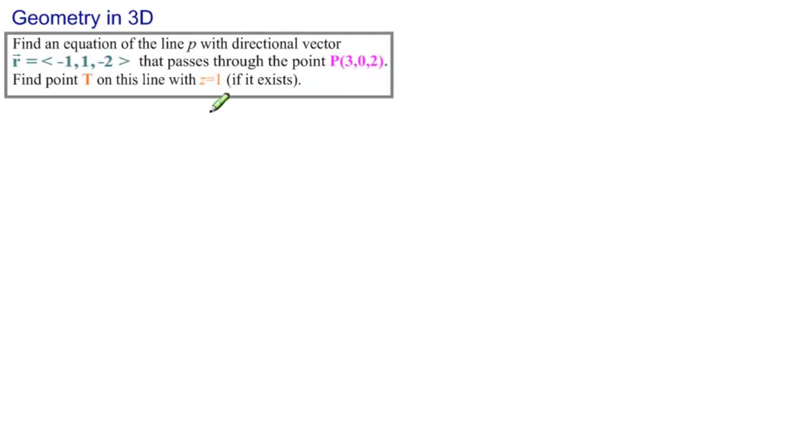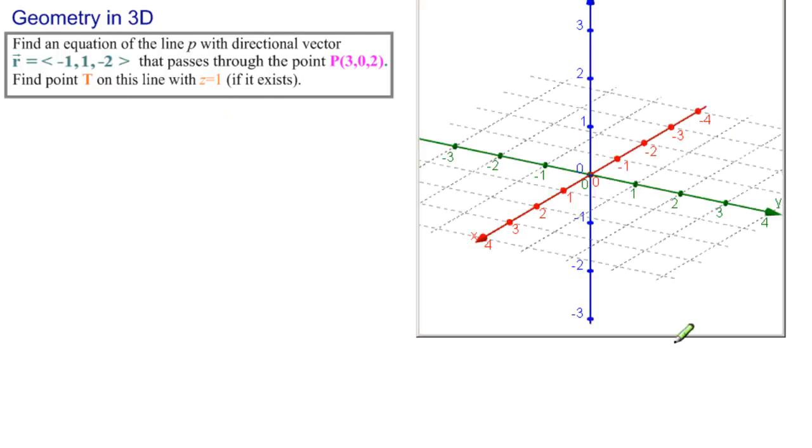Let's first see that this is enough information. So bring up our three-dimensional graph, and here's the point P at 3, 0, 2.